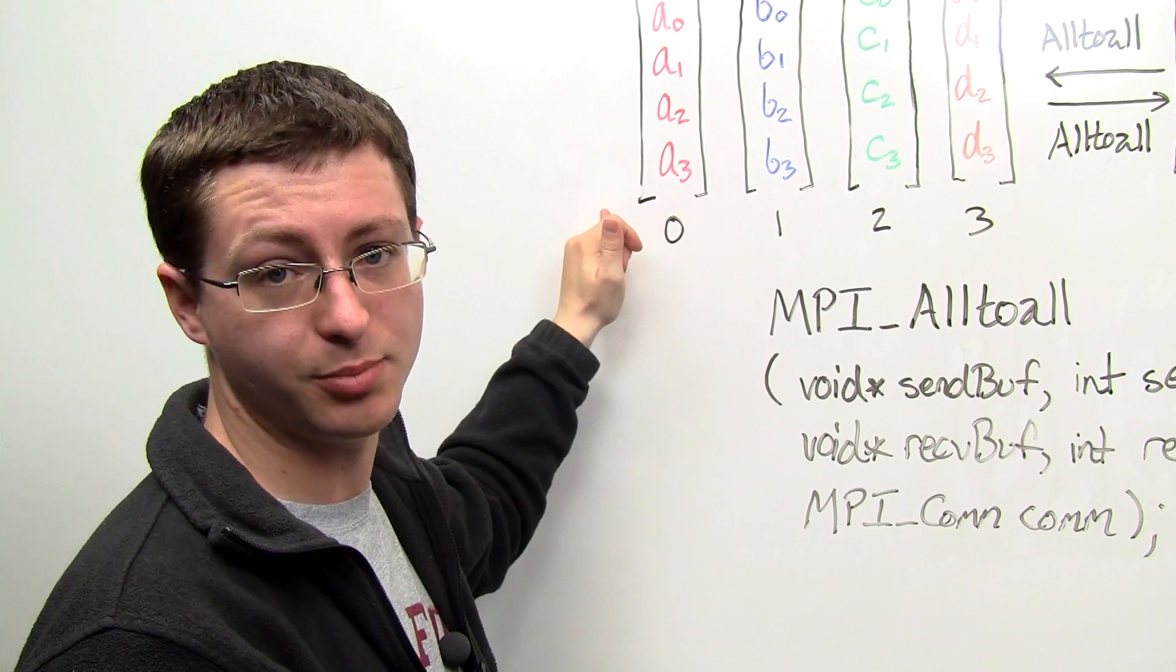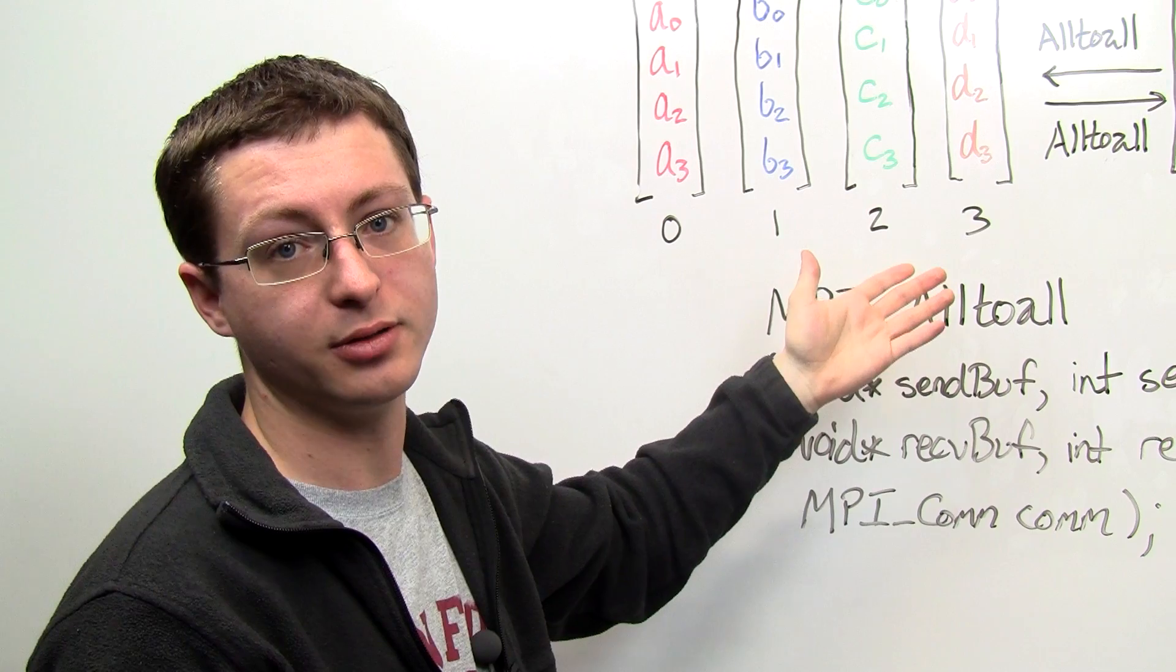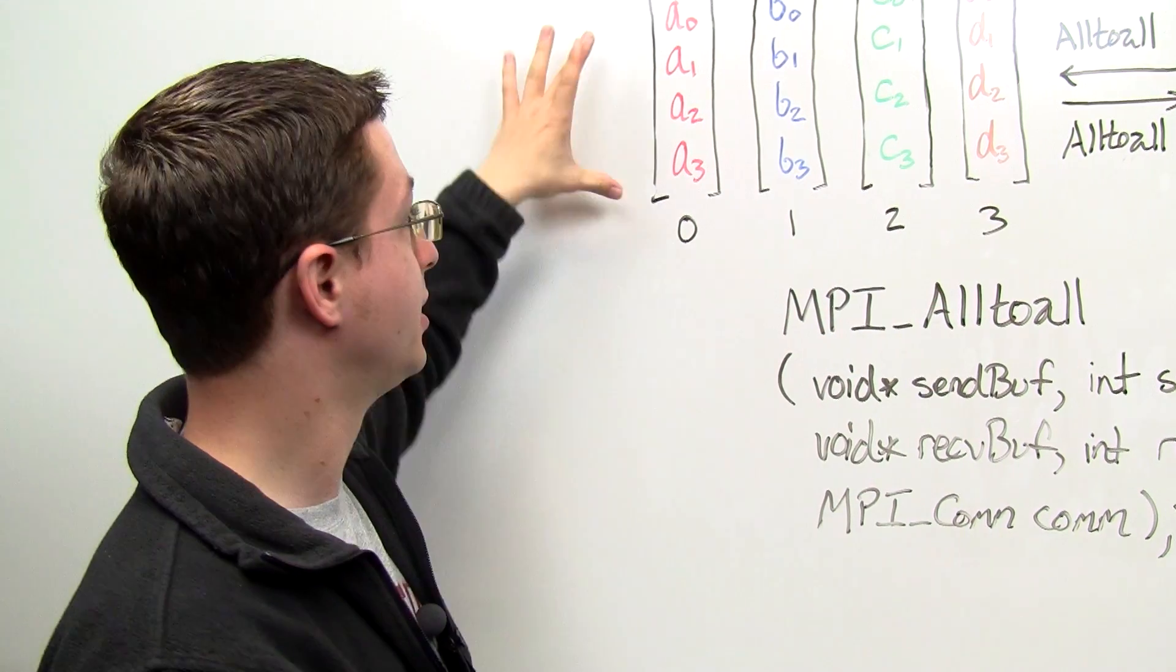And to make things more concrete, let's suppose that process 0, 1, 2, and 3 each have 64 floating point numbers in their buffers.